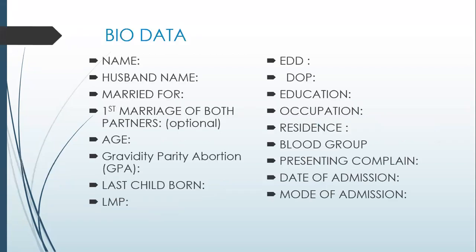First of all, ask about the bio data: the name of the patient, husband's name, marriage history, whether it is the first marriage of both partners, age of the patient, gravity, parity and abortion — gravida, para, abortion — the last child born, the LMP, estimated date of delivery, calculated duration of the pregnancy by the help of any formula or Ops wheel. Then ask about education, occupation, residence, and blood group.